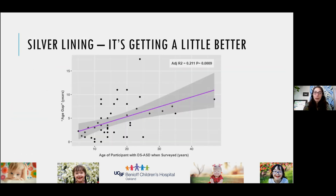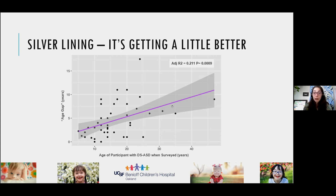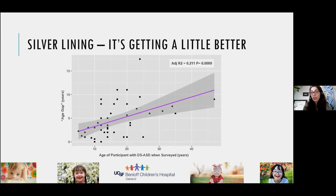Why the delay? I want to point out there is a silver lining: survey participants with younger children — those getting evaluated and diagnosed now — had a smaller age gap between first concern and diagnosis than participants with older children who went through this process many years ago. So we are getting better as a community in recognizing and diagnosing autism, and this is worth calling out.